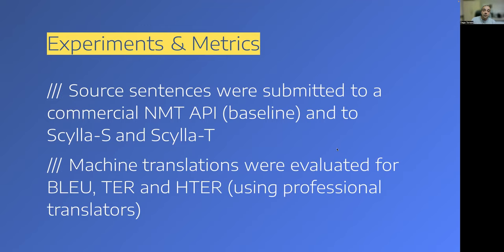For the experiments, we submitted the source sentences to a commercial NMT API taken as the baseline — in this case the second version of the Google Translate API — and to SILA-S and SILA-T. The machine translated sentences were then evaluated for BLEU, TER, and HTR. For HTR, we used two professional translators for revising and altering the sentences, and then three other people for scoring the changes made by the human translators.